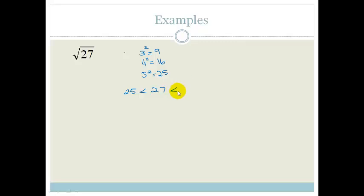Now, we need to find a perfect square that is bigger than 27. 6 squared is 36, so 36 will be on that side. Now we know that 27 lies between 25 and 36. But this isn't 27, this is root 27.